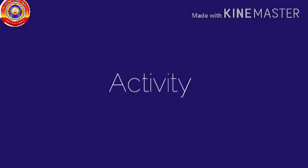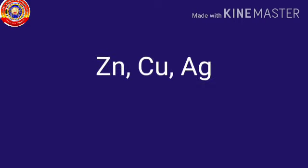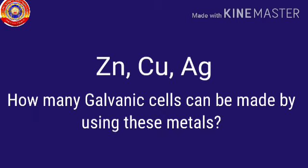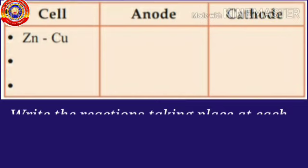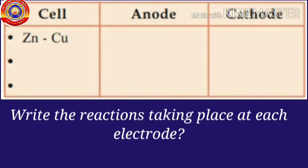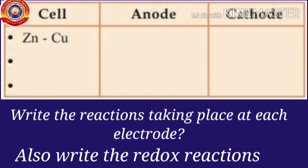So students, here is an activity. There are three metals: zinc, copper and silver. Using these metals, you have to construct as many cells as you can possible. And also, write the anode and cathode in each. Mention the cell reaction taking place at each electrode. And also, write the redox reactions.